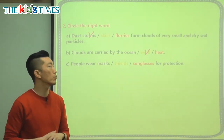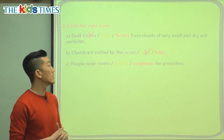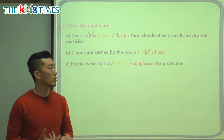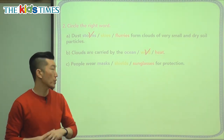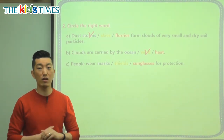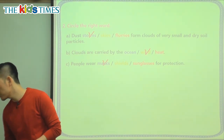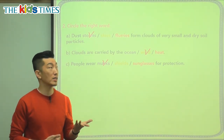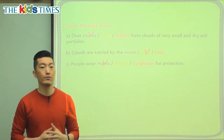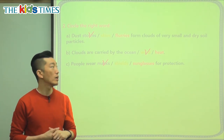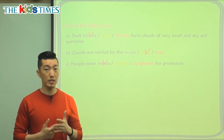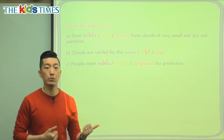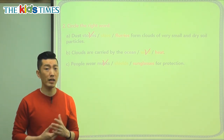Especially in spring when there's a lot of wind, that's when dust becomes a big problem. The last question: do people wear masks, shields, or sunglasses for protection? You can wear sunglasses to protect your eyes, and a shield would be too big and uncomfortable. So the correct answer is a mask — you put it over your face. Your mom or dad may say: put this mask on whenever you go outside, because of this dangerous yellow dust. If you breathe it in, it'll cause all kinds of problems inside your body, so it's safer to wear a mask during spring.